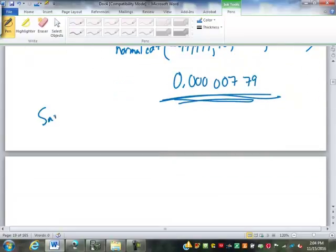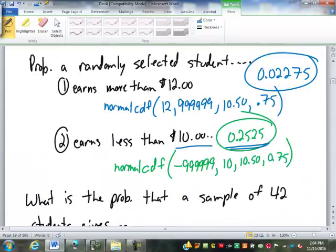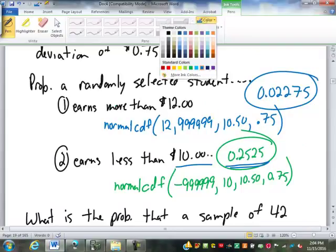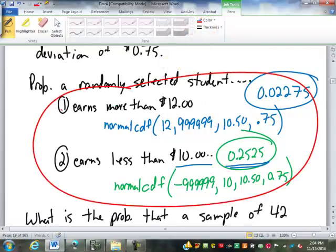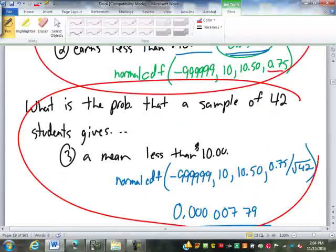So 0.25, that's not that big of a stretch to have an individual under 10 bucks. But to have a sample of 42 with a mean under 10 bucks an hour is quite a stretch. That is our sampling distribution. So you gotta be very careful when we're doing normal probabilities. Is it an individual value, so you can just use the standard deviation? Or are we talking about the mean of a sample, in which case you gotta take that standard deviation divided by the square root of that sample size.